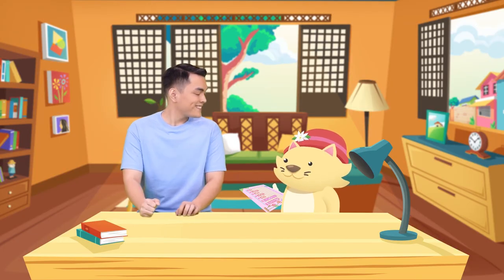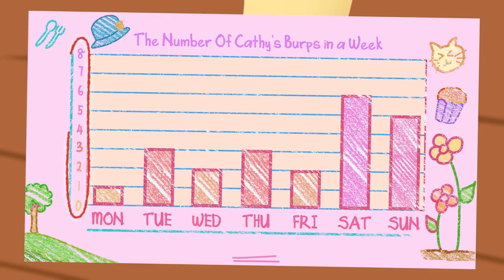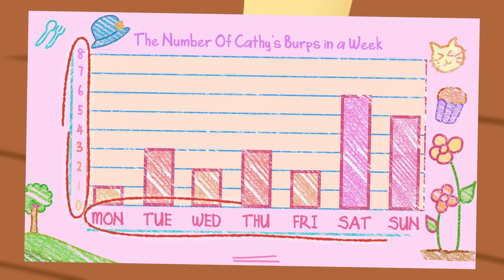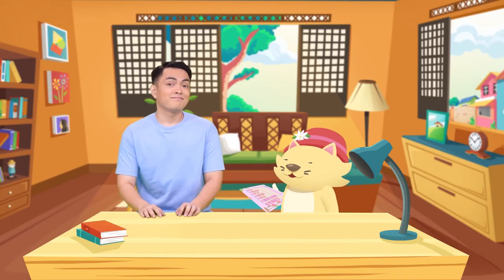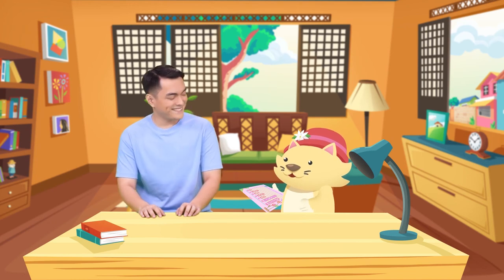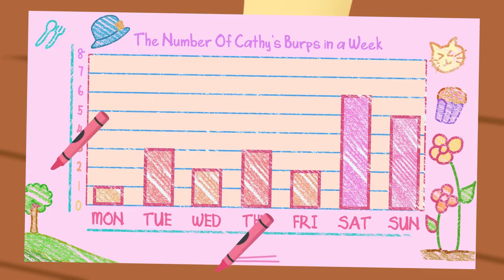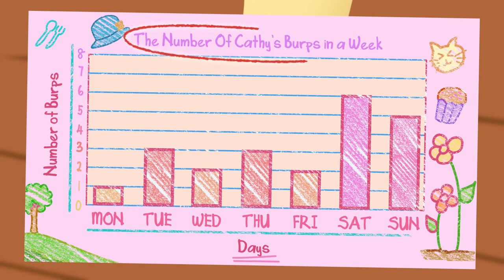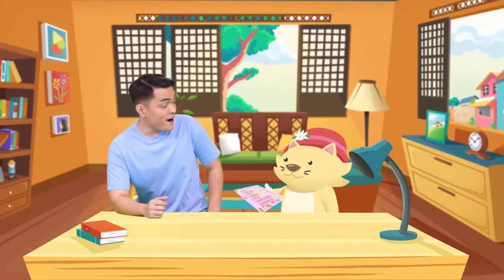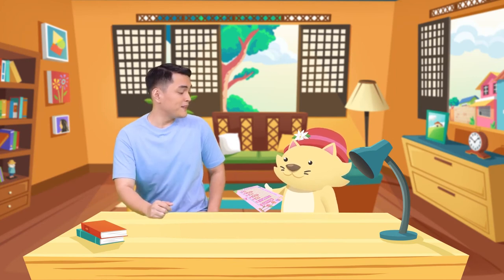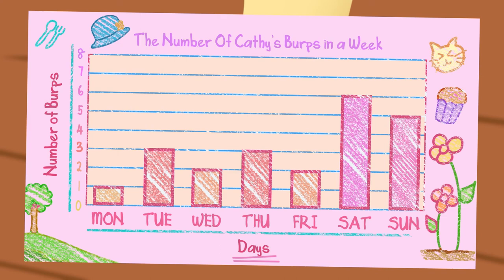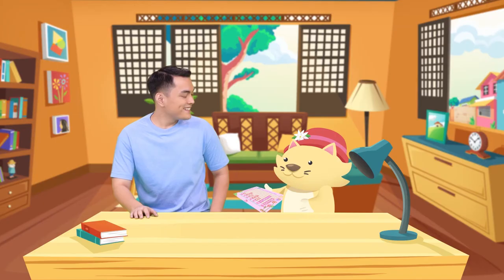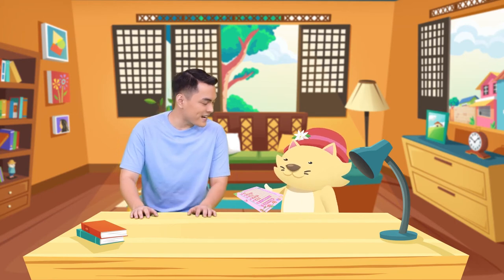Almost — what are those numbers there? The number of burps. And these are the days. I see — the labels. I forgot to write the labels. Done! We have the title, the label, and the graph. Wow, Cathy, it's such a nice graph. And it looks like you burped a lot on Saturday and Sunday. Maybe because I ate a lot during weekends. Thank you for sharing this with us, Cathy — it's the first time I've ever seen such a graph.